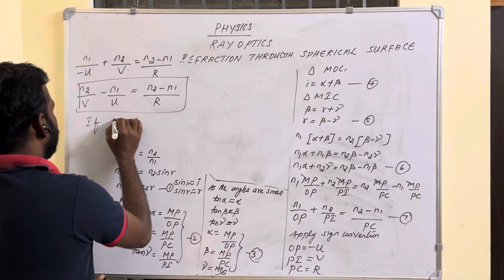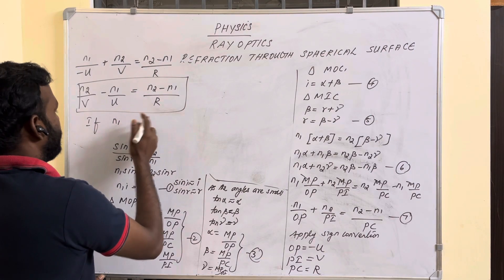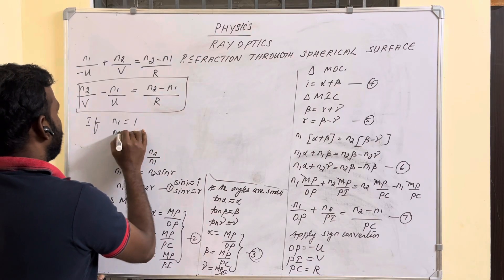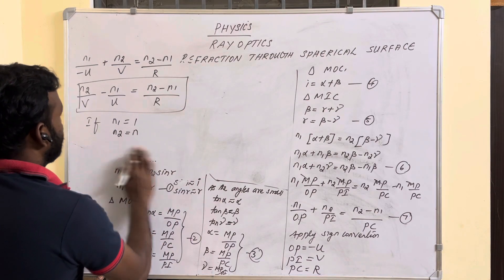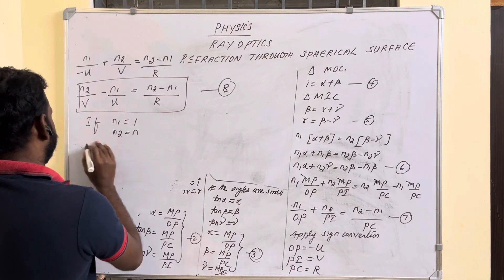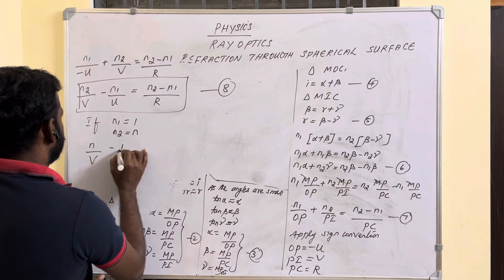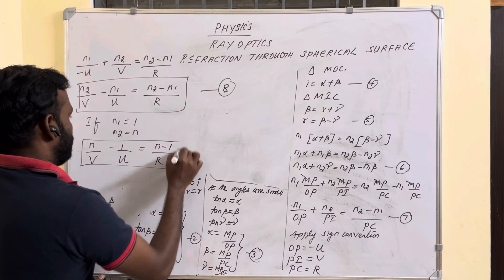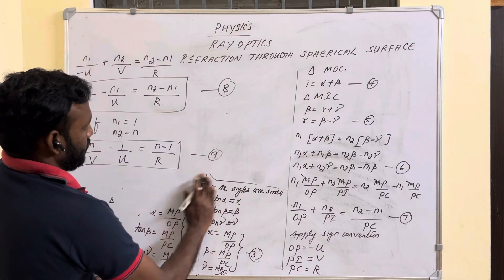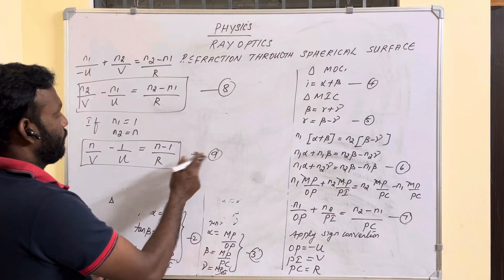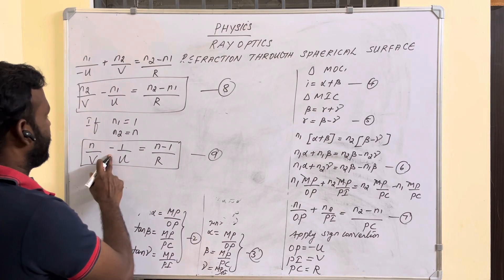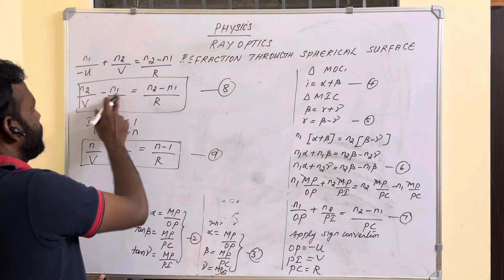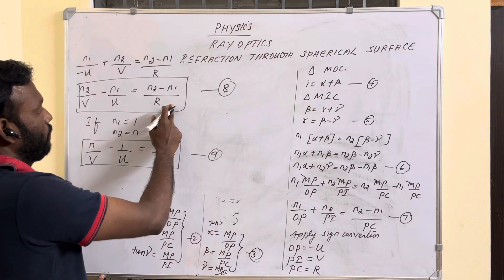As a special case, if medium one is air then n1 = 1, and if the second medium has refractive index n then n2 = n. This equation becomes n/v − 1/u = (n − 1)/r. Let this be equation number nine. In general the formula is n2/v − n1/u = (n2 − n1)/r.